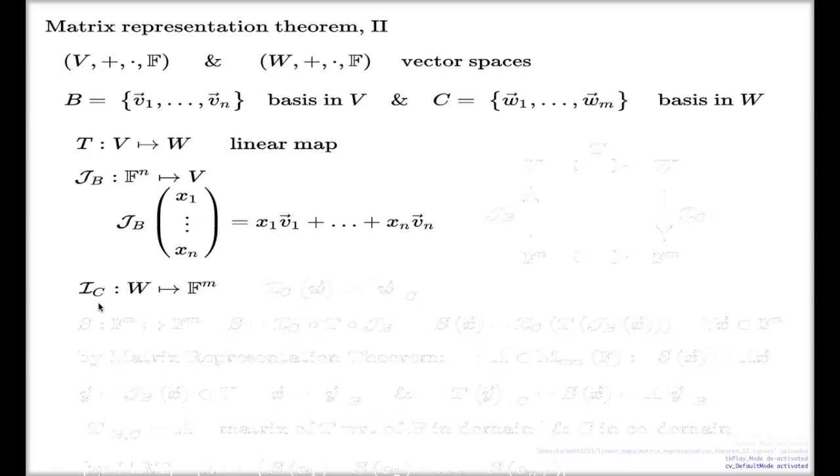That's the map which acts in the opposite direction—it takes from W to Fᵐ. That's the map which takes a vector w and produces the m-tuple of coordinates of that vector with respect to the given basis. We discussed this map on Tuesday and proved it's a linear map.